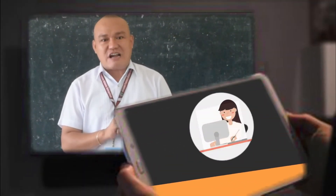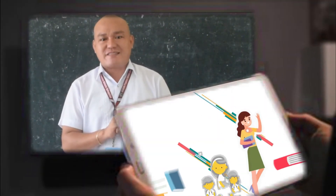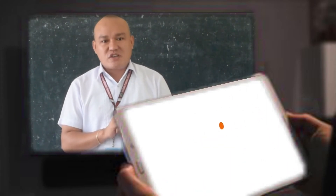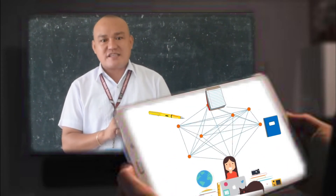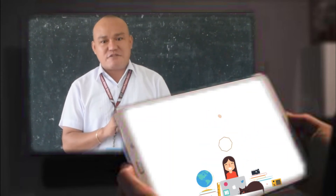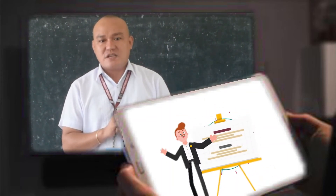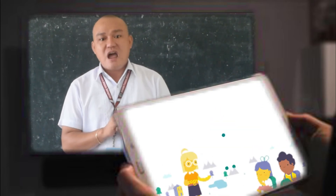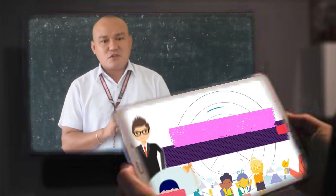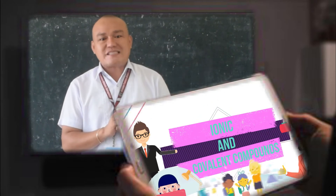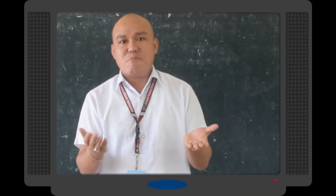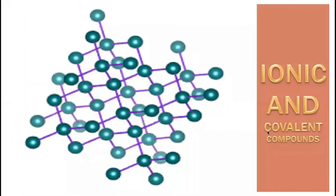Ionic compounds are formed from strong electrostatic interactions between ions, which result in higher melting points and electrical conductivity compared to covalent compounds, which have bonds where electrons are shared between atoms. To know more about this video lesson, please stay with me as we discuss all about ionic and covalent compounds. Welcome, Grade 9 science learners, to our new video lesson for today, which is all about ionic and covalent compounds.